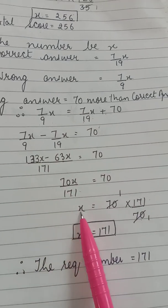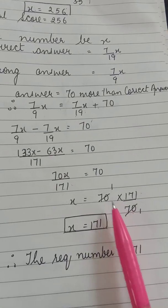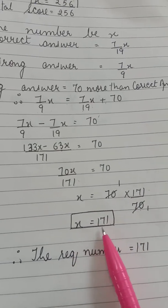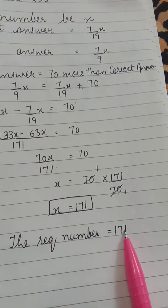LCM and on calculating, the value of X is 70 into 171 upon 70. 70 and 70 will get cut. X is 171. Therefore the required number is 171.